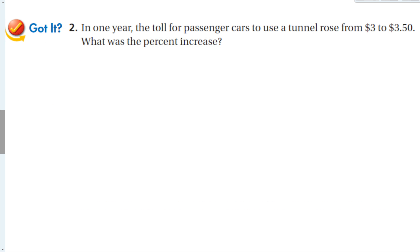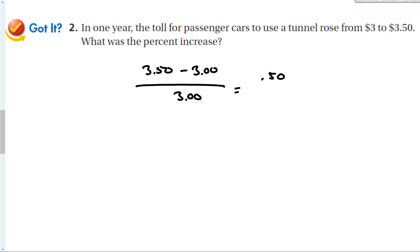In one year, the toll for passenger cars to use a tunnel rose from $3.00 to $3.50. What was the percent increase? So we calculate $3.50 minus $3.00 over the original amount of $3.00. That's $0.50 over $3.00, which gives about 0.17, or a 17 percent increase. Only 15 cents, but it's a pretty substantial percent increase.